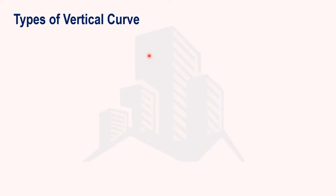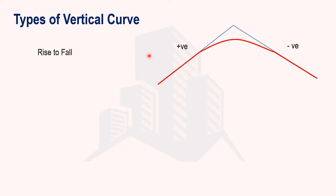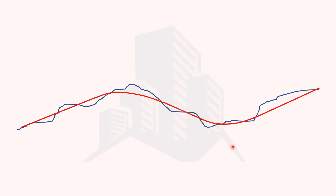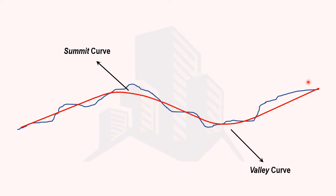The curve formed by rise to fall — where a positive gradient meets a negative gradient — is called a summit curve, sometimes also named a crest curve. Another type of vertical curve is formed by fall to rise, and that type is called a valley curve, sometimes also named a sag curve. In the road profile, the summit curve is formed by rising-to-falling gradient and the valley curve is formed by falling-to-rising gradient.